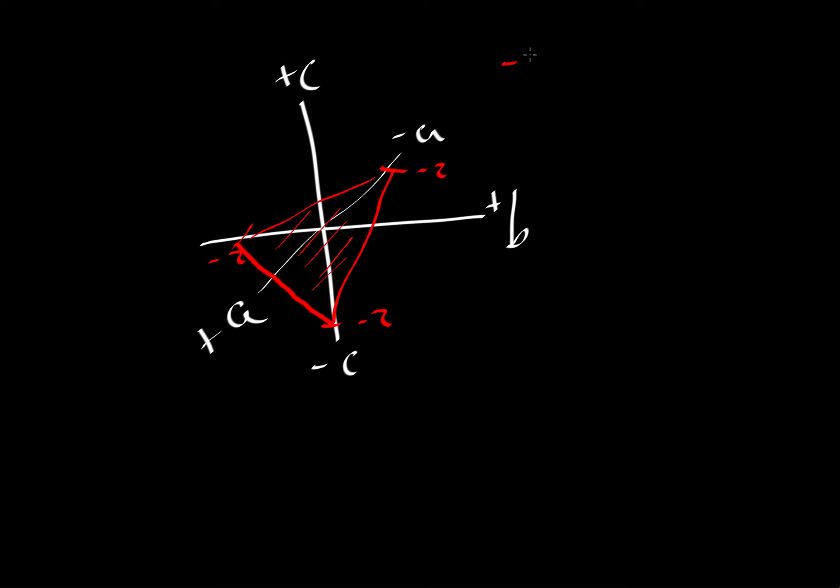So what would be the index for that face? Well, our intercepts would be negative 2A, negative 2B, negative 2C. We would still go through the same set of operations. We would invert the fractions, and now we have 1 over minus 2, 1 over minus 2, and 1 over minus 2. We can multiply out by 2 to clear the fractions, and that would give us minus 1, minus 1, and minus 1. What we're going to do is a little bit of a trick. Instead of leaving the minus sign there, we're just going to put a bar over each of these, and that'll mean a minus 1. So these would be the Miller indices for the face that is hitting these at the negative side.